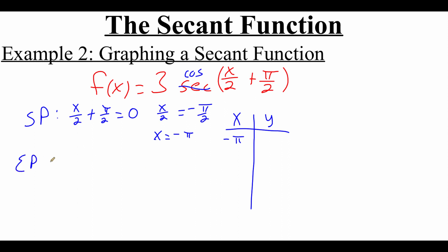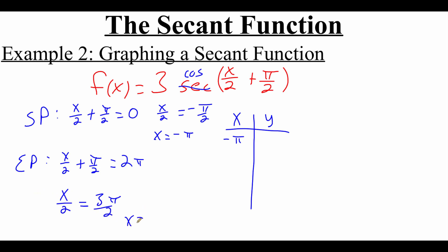To find the ending point, take the expression inside the parentheses and set it equal to 2π. Subtracting π/2 gives x/2 = 3π/2, then multiplying by 2 gives x = 3π. So the last x-value is 3π. Halfway between −π and 3π is π; halfway between −π and π is 0; halfway between π and 3π is 2π.